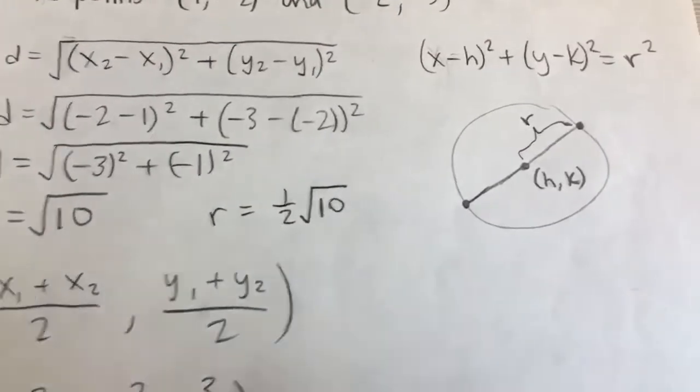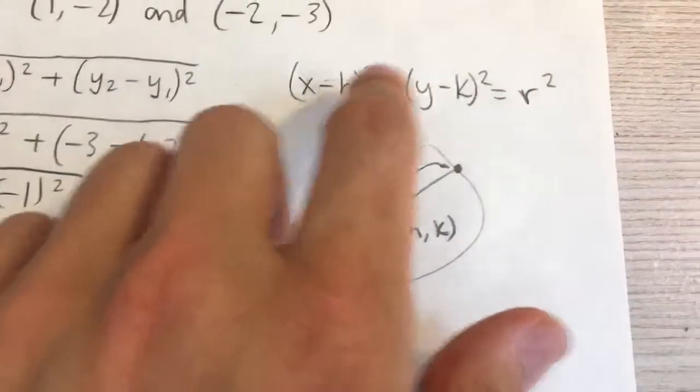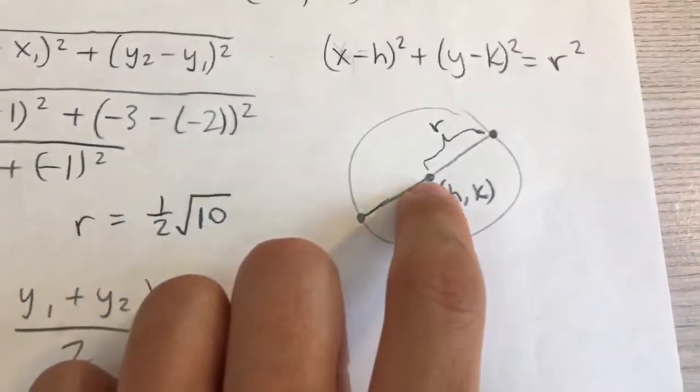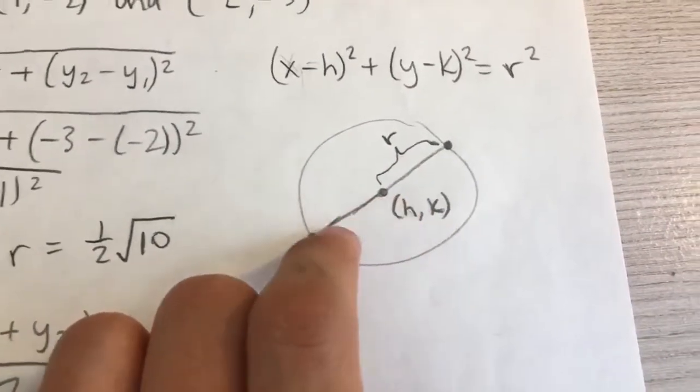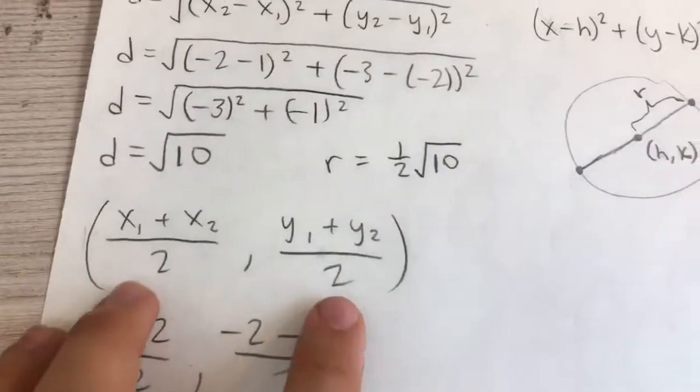Also, we have to find the coordinates of the circle. We can plug in all three of the values, and if you notice, it's halfway between the two endpoints. In other words, it's the midpoint of the line between these two endpoints. So we take the midpoint formula.